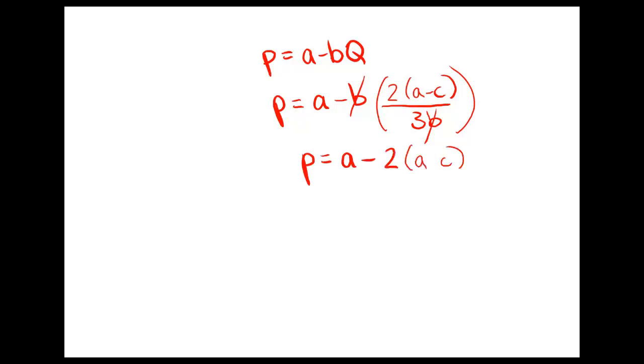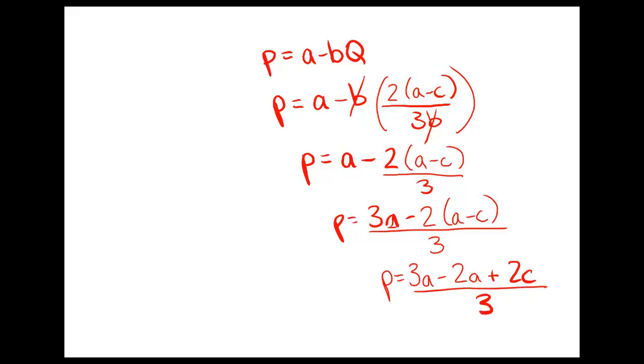So we're going to take our inverse demand function and substitute in that quantity that we have for the market. We can notice that the B's cancel, which simplifies things. So we'll just rewrite this as A minus 2(A - C). And this part is still over 3. Now we want the entire expression over 3. So we're going to put 3A minus 2A minus C. So now we have 3A and we're going to expand this out. So minus 2A plus 2C all over 3. And that gives us P equals (A + 2C)/3 as our equilibrium price.